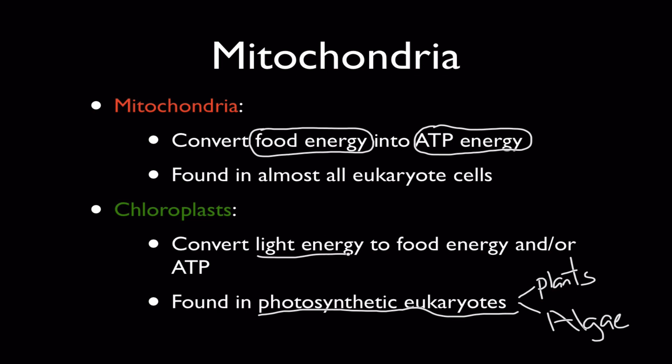Chloroplasts, they convert light energy, usually from the sun, into a form of chemical energy, which could be something like glucose, fructose, starches, all those things, or they also produce ATP directly. So you can see that mitochondria and chloroplasts, their main job is energy conversion.